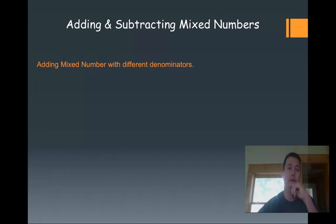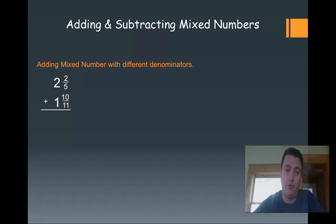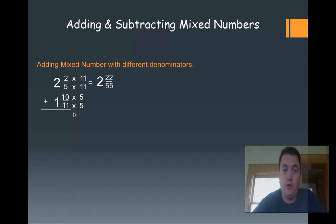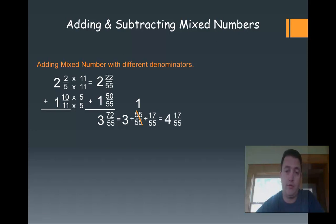Now let's look at adding mixed numbers where one denominator is not a factor of the other, so we need some practice with these. I've got 2 and 2 fifths and 1 and 10 elevenths. I'm going to have to multiply these two numbers together, so my common denominator is going to end up being 55. That gives me 2 and 22 fifty-fifths plus 1 and 50 fifty-fifths. Adding those together I get 72 fifty-fifths and a whole number of 3. I've got a fraction greater than 1, so I convert: 55 fifty-fifths plus 17 fifty-fifths. Crossing out the 55 gives me a whole of 1, for a total of 4 and 17 fifty-fifths. I don't need to simplify further because 17 is a prime number.